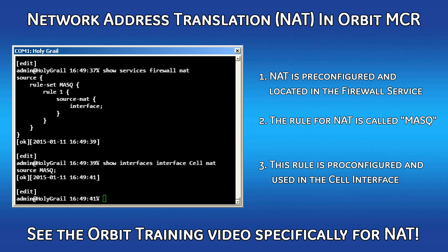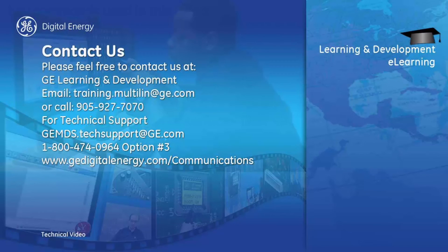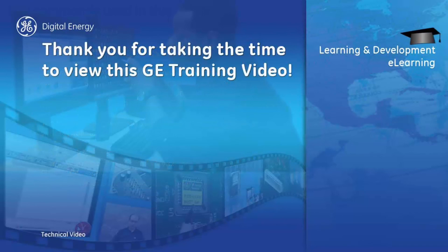That wraps up the importance of firewall and NAT configuration in the Orbit MCR cellular interface. I hope this video was helpful for you, and for additional information please visit our website at www.gemds.com. We'll see you next time.